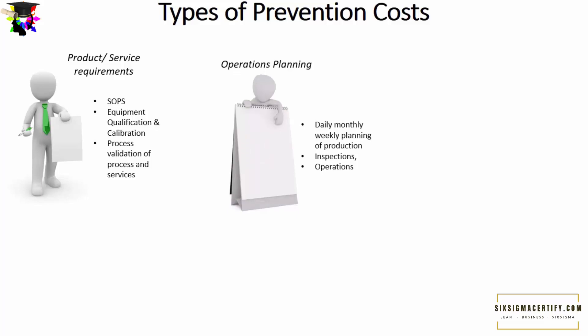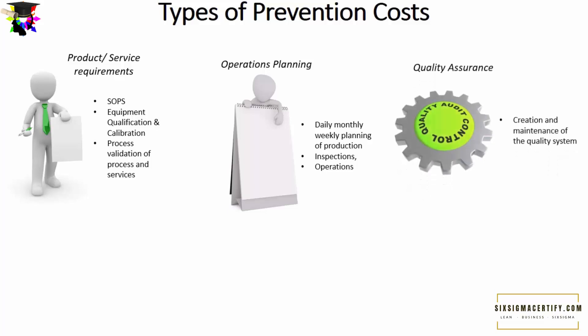The next type of prevention cost involves operations planning — the daily, monthly, and weekly planning of production, including costs involved in inspections and operations. This covers planning when work is done, how much raw material to take, the number of manpower required, and completion timelines. Although Six Sigma is primarily used in manufacturing, operational planning prevention costs are also helpful in service and business industries.